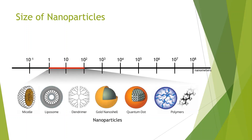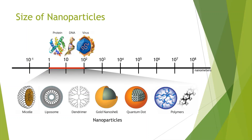Nanoparticles range in size from about 1 to 100 nanometers, which is a similar size to proteins, DNA, and viruses. Nanoparticles are at least 10 times bigger than a glucose molecule, while an entire cell is at least a hundred times larger than a nanoparticle.